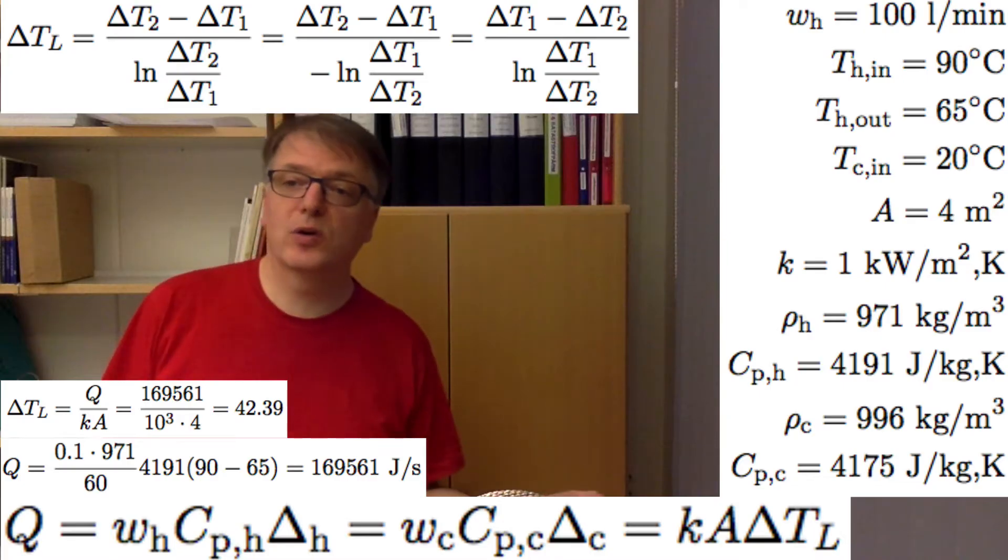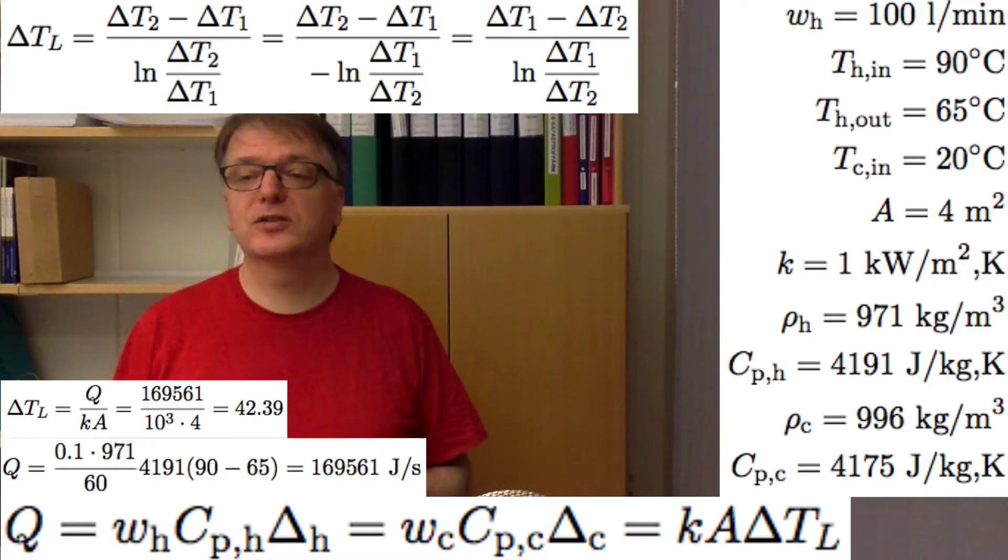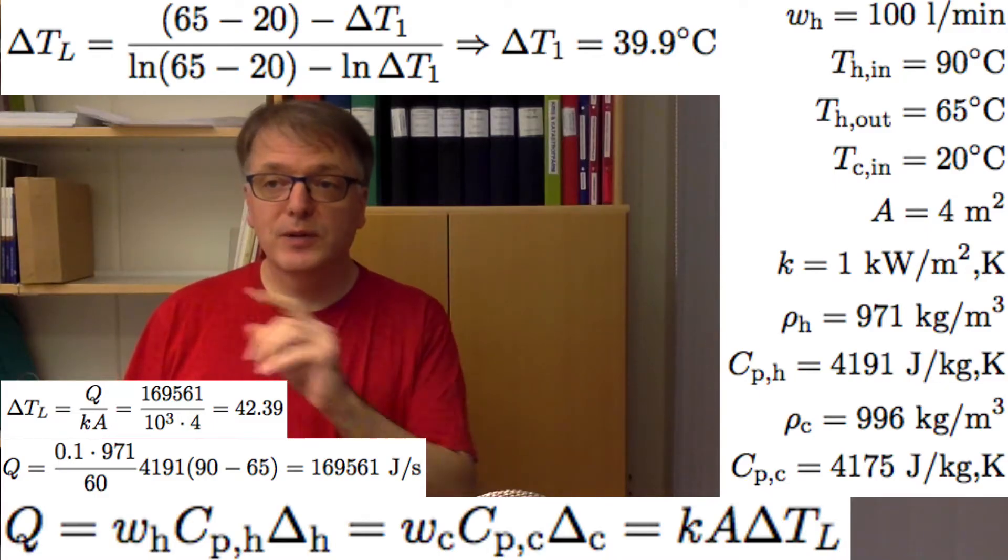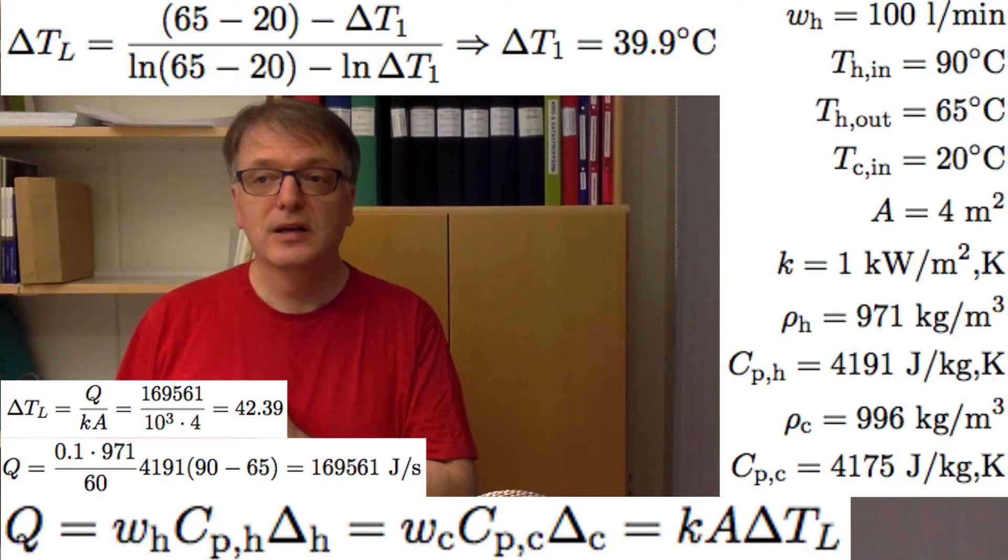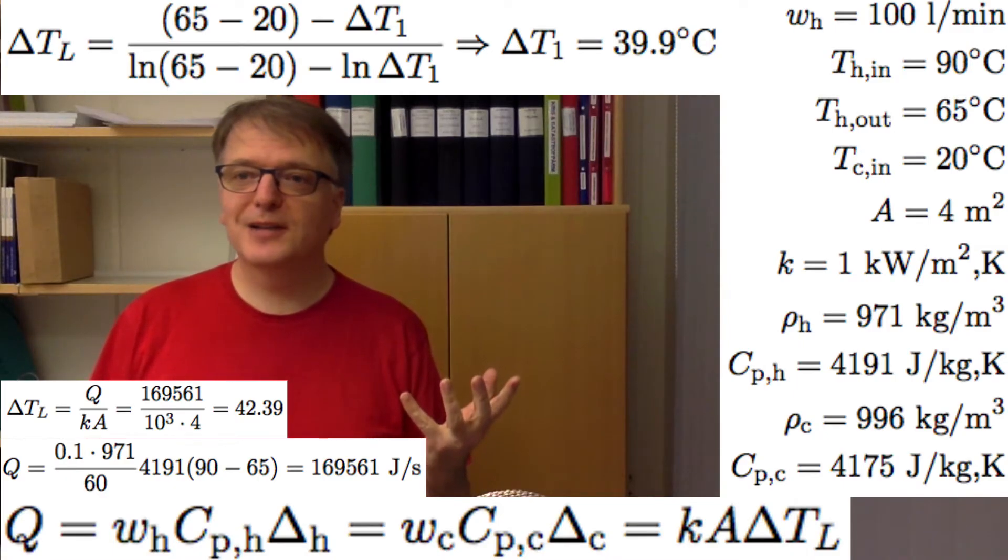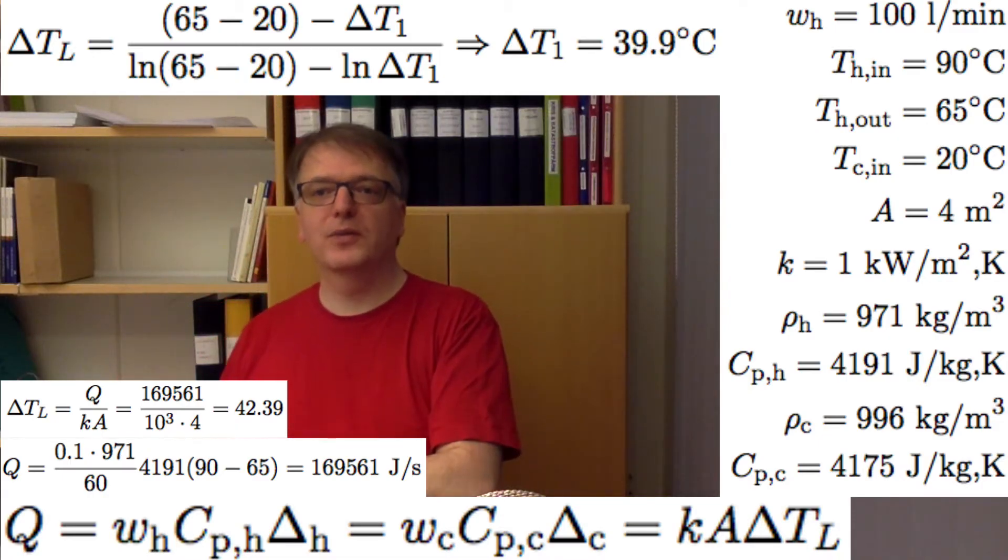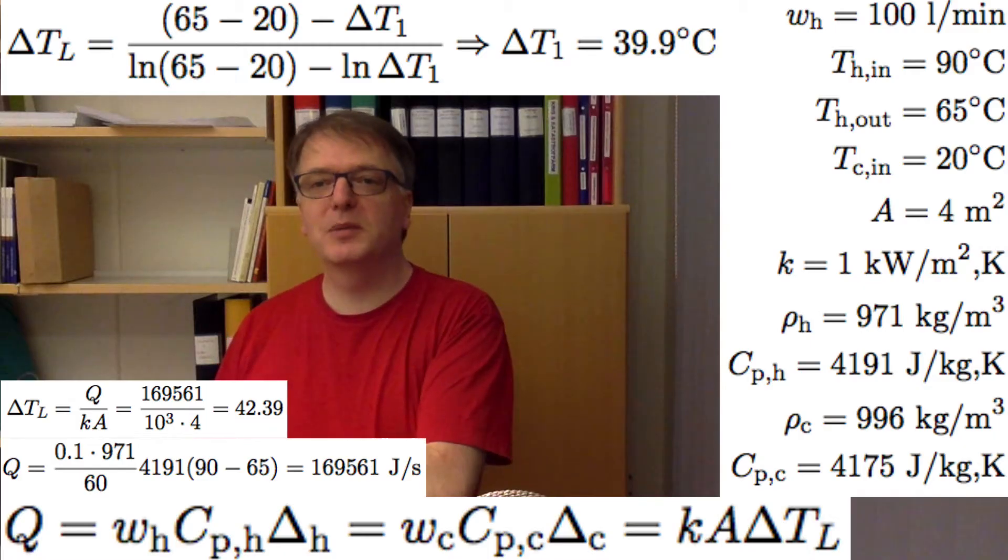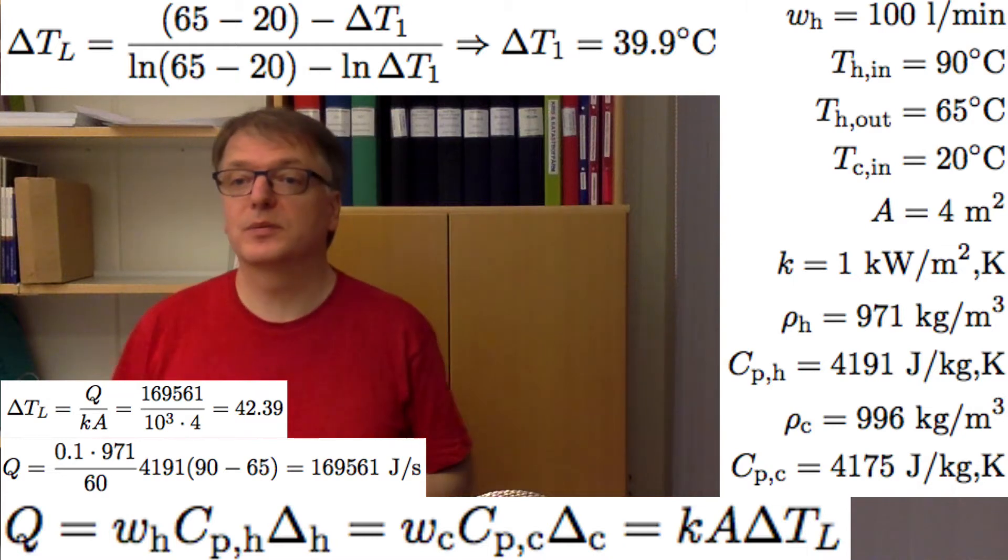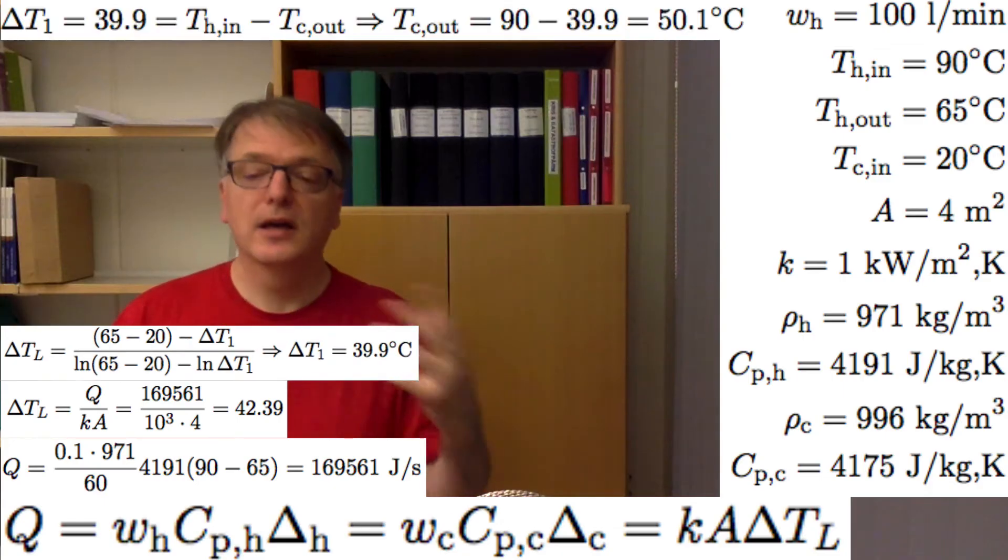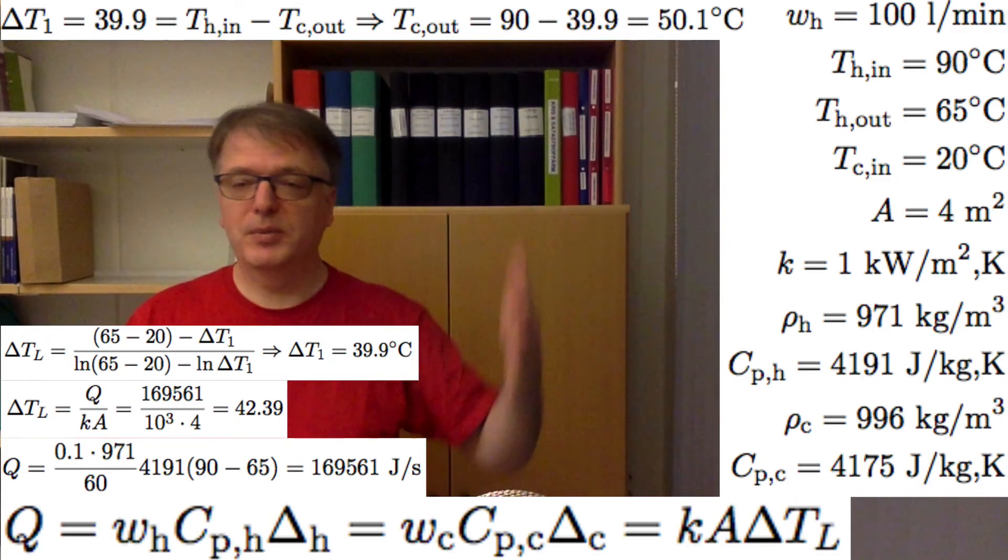We know the formula for the logarithmic mean temperature: (ΔT₂ - ΔT₁) / ln(ΔT₂/ΔT₁). First you have to realize that ΔT₂, that's 65 minus 20. It's important to realize it's a counter-current setup, so the coldest cold medium inflow should meet the coldest hot medium outflow. So 65 minus 20, that's 45 degrees on one side.